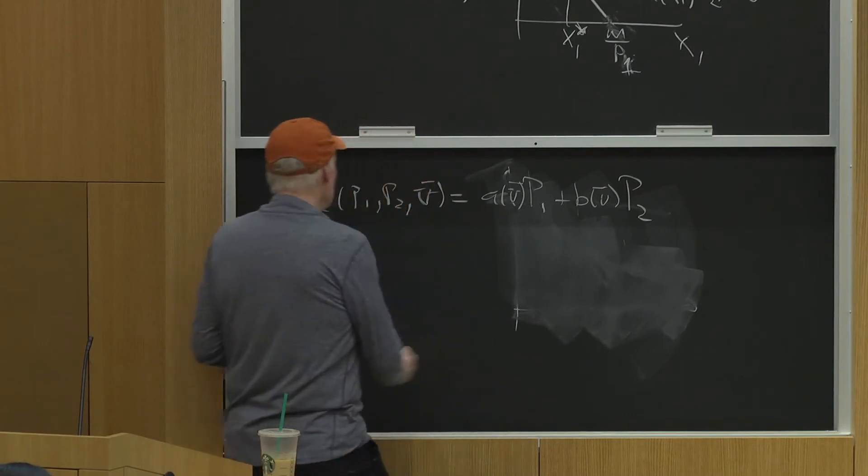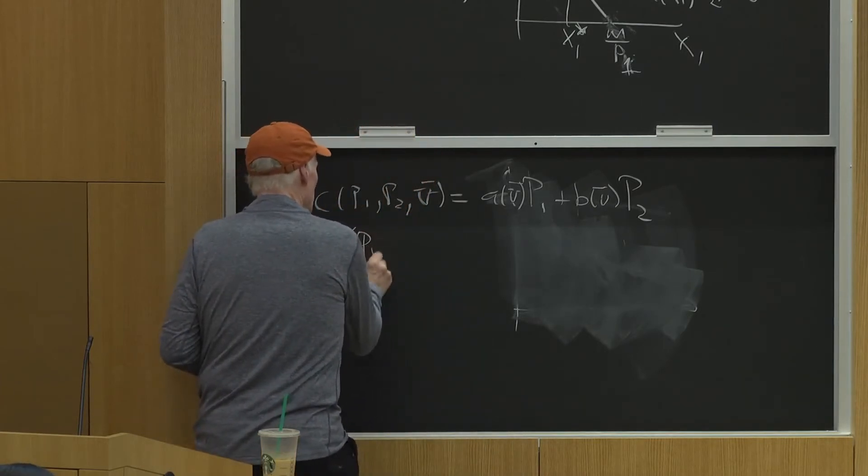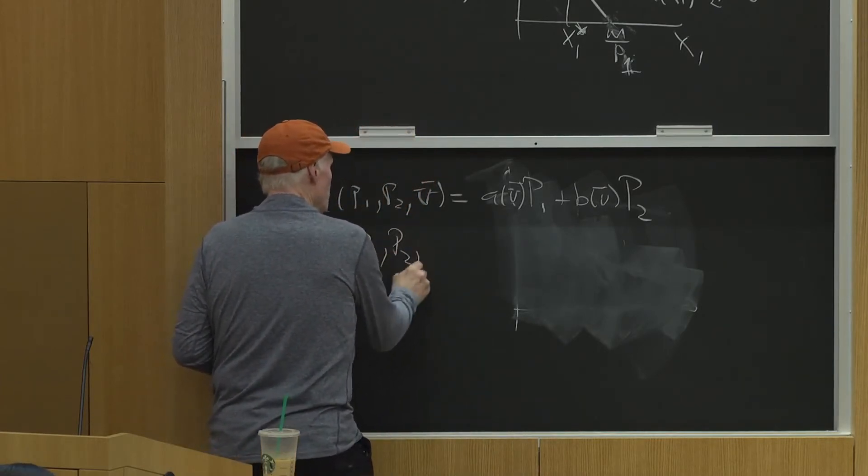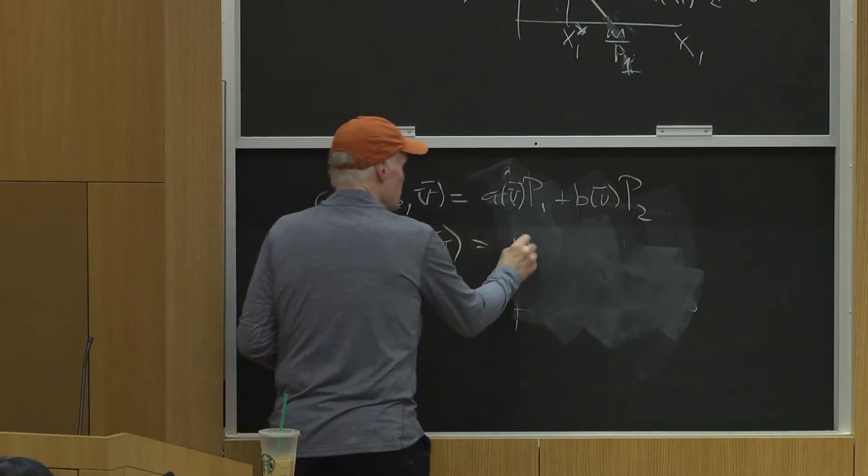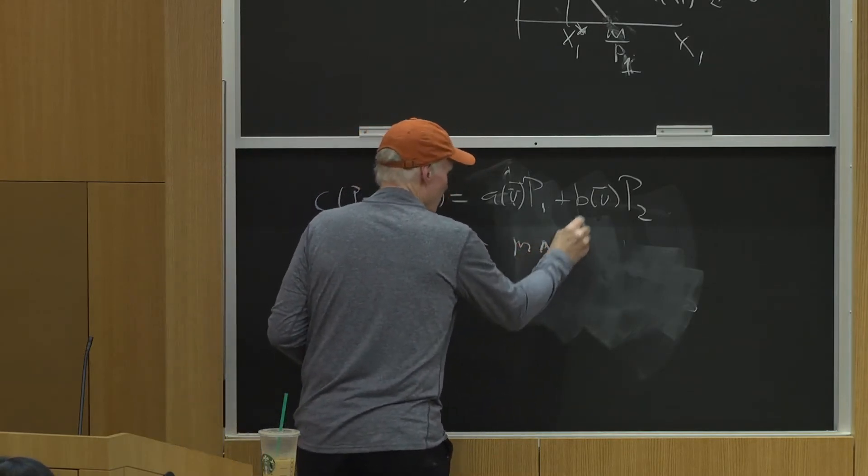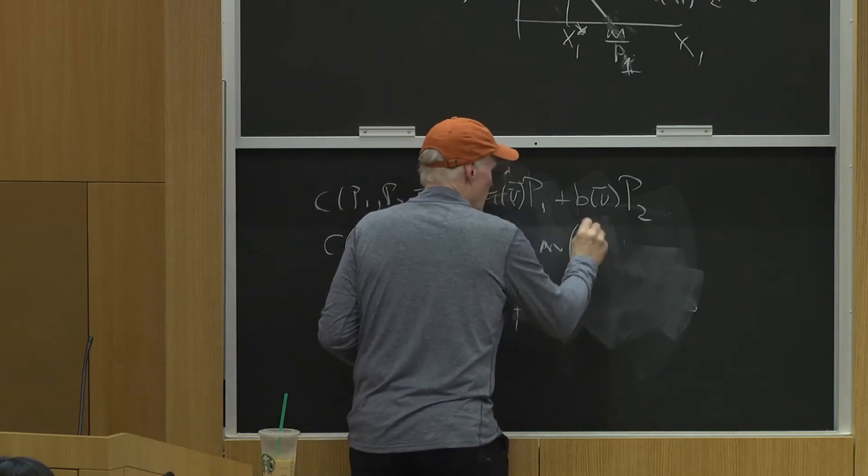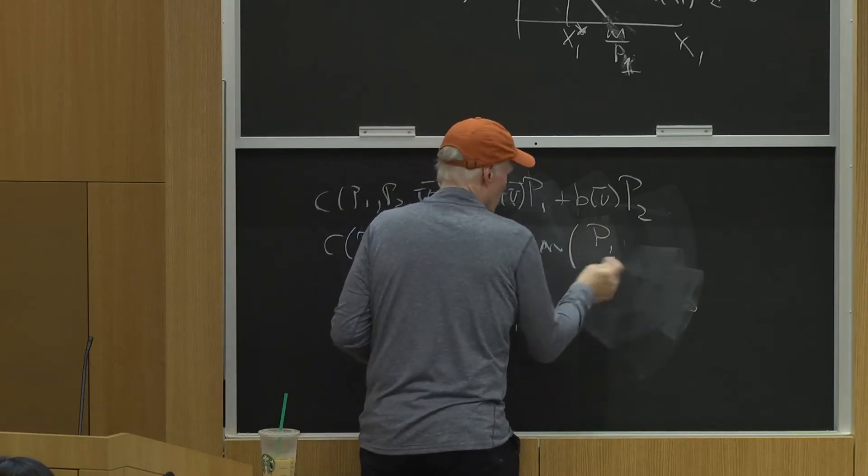What if somebody said, no, my cost function is P1, U of P1, P2, U bar, equals the minimum of P1, call it, of A, P1,